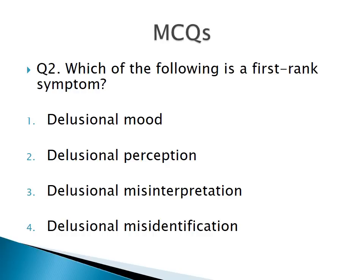Question 2: Which of the following is a first rank symptom? (1) Delusional mood, (2) Delusional perception, (3) Delusional misinterpretation, (4) Delusional misidentification. The correct answer is number 2 — delusional perception. This is the first rank symptom, while the others are delusions but are not first rank symptoms.